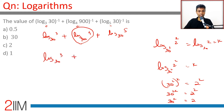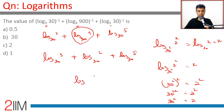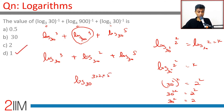So we are talking about log 3 to the base 30 plus log 2 to the base 30 plus log 5 to the base 30, which is log of 3 × 2 × 5 to the base 30, which is log 30 to the base 30, which equals 1. Delightful question!